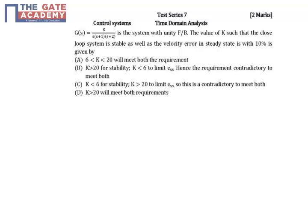In this problem, we're given a second-order open loop transfer function and asked to find the value of K such that the closed loop system is stable. Additionally, the velocity error in the steady state should be less than 10 percent.